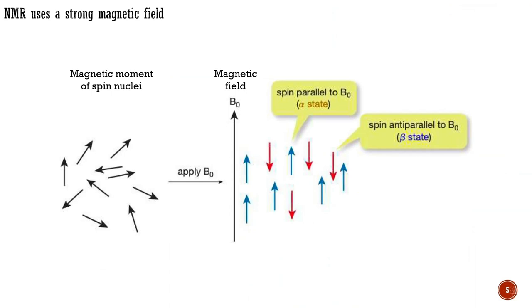In a similar way, some atomic nuclei act like tiny compass needles when placed in a magnetic field and have different energy levels according to the direction in which they are pointing. A real compass needle can rotate through 360 degrees and has an essentially infinite number of different energy levels, all higher in energy than the ground state pointing north. Fortunately, things are simpler with an atomic nucleus — its energy levels are quantized, just like the energy levels of an electron, and it can adopt only certain specific energy levels.